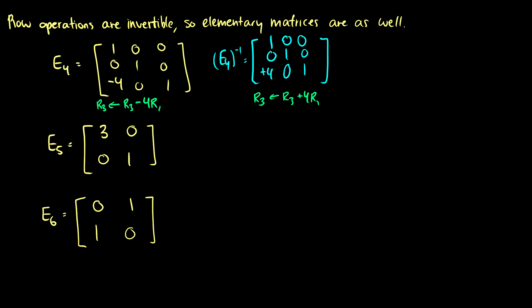E5 inverse — what is going on here? Well, this looks just like the first matrix we did. It's going to scale row 1 by 3, so R1 becomes 3R1. So what do we do for the inverse? We want our R1 to become 1/3 R1, because we need to get it back to its original. So for that, we just put a 1/3 here. And we're done. This is E5 inverse.